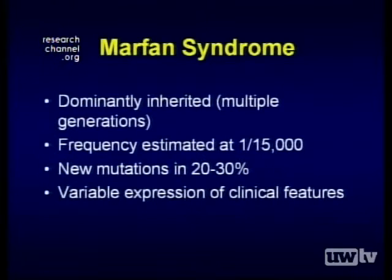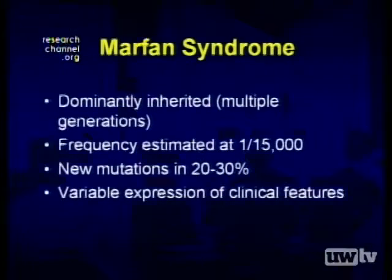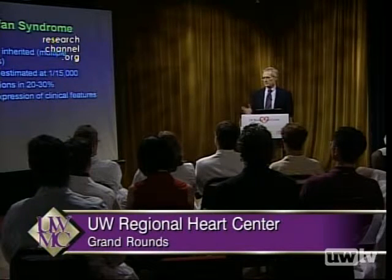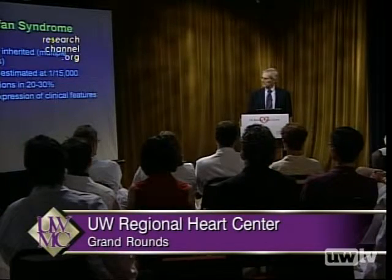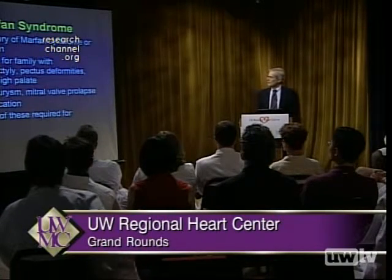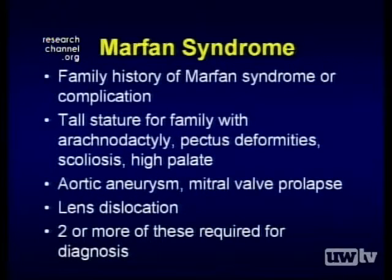The frequency in the population is about 1 in 15,000, although the National Marfan Foundation often estimates it to be a little bit more frequent than that. One of the things that really does contribute to late diagnosis is the variable expression of clinical features, so that not all of the major features that we expect are present. The features that we rely on to make the diagnosis include a family history of Marfan syndrome or a complication compatible with it — aortic dissection in a family is a very strong indication that this is something to be thought about.